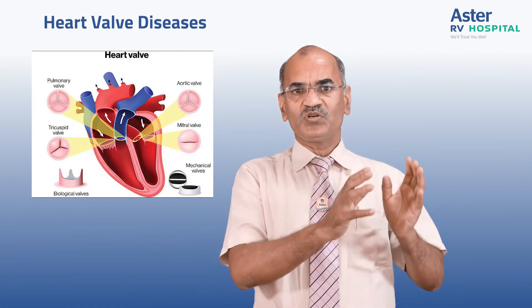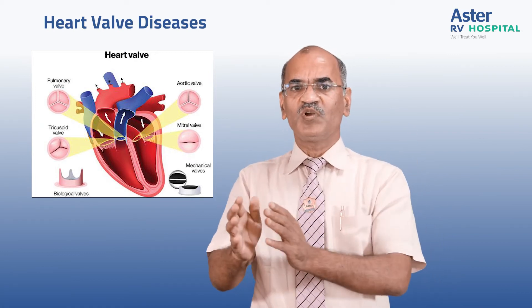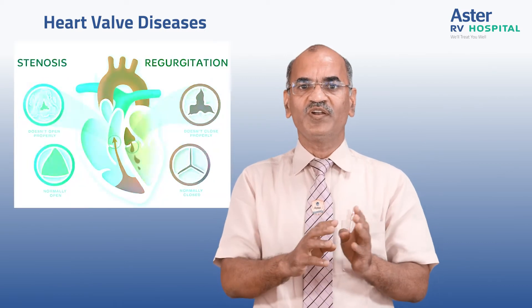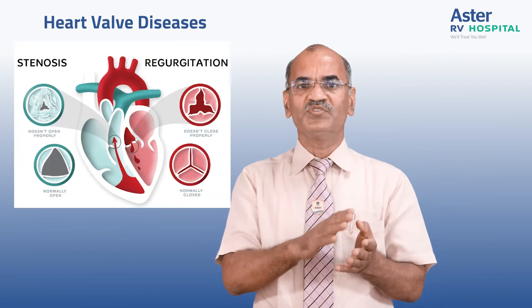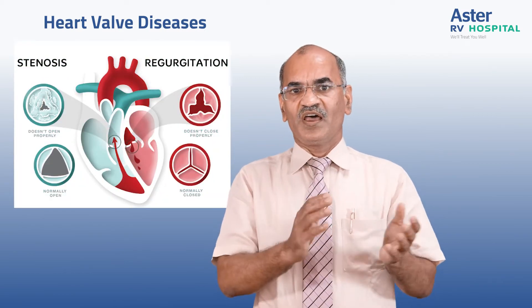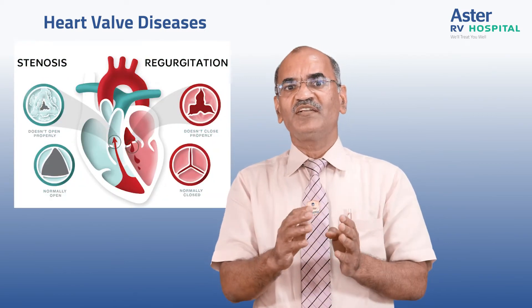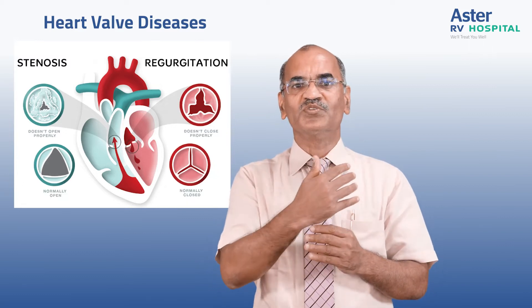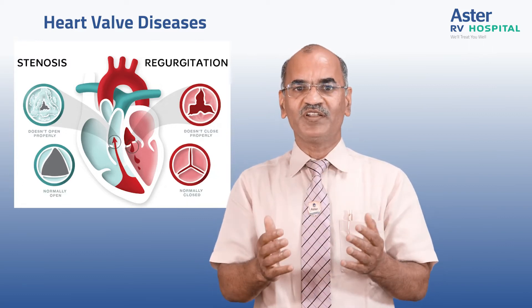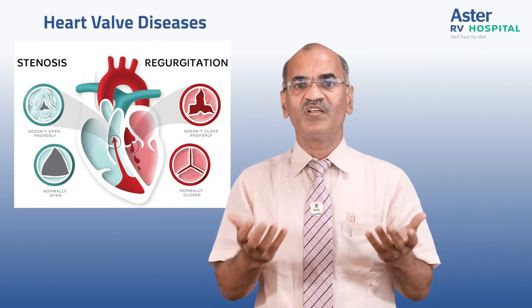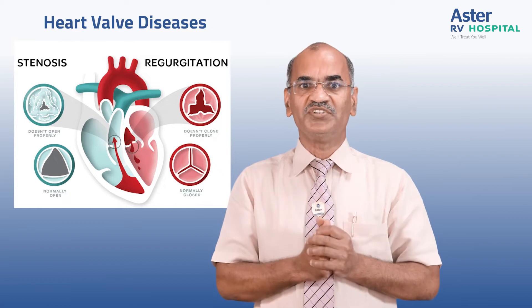If they don't allow sufficient blood flow in one direction, then we call it stenosis or obstruction. Instead of that, if they allow flow in the reverse direction also, then we call it valvular leakage or regurgitation.